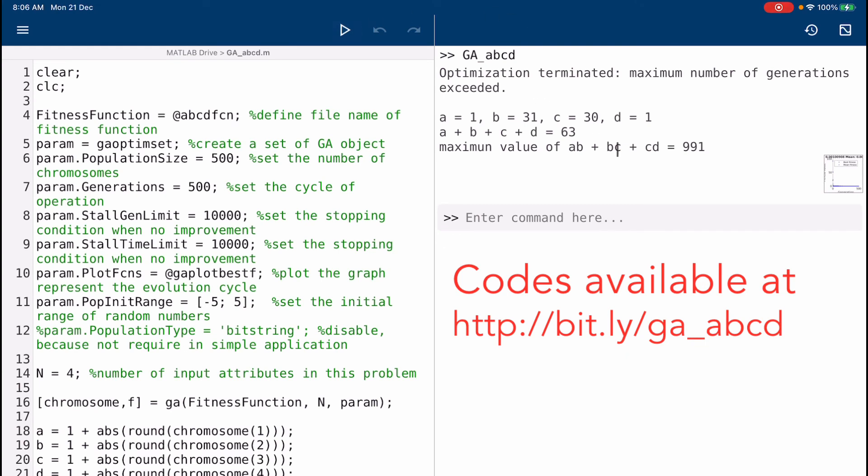Here is the result: a equals 1, b equals 31, c equals 30, d equals 1. Therefore, a + b + c + d sum up together is 63, and the maximum value for ab + bc + cd is 991, which is the same as the answer derived by algebraic methods.